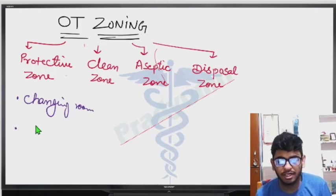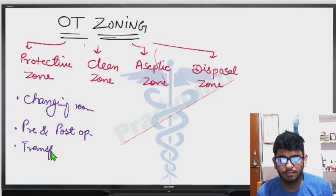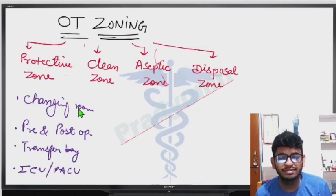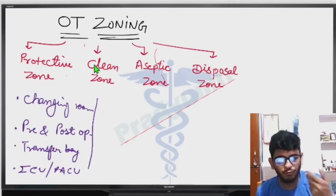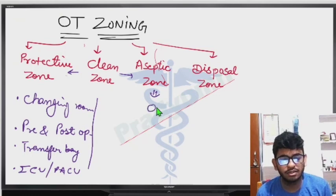The protective zone includes the pre-operative and post-operative rooms, the transfer bay, the ICU, and what we call the PACU. The clean zone connects the protective zone to the OT's aseptic zone — it is the corridor area. The aseptic zone is the actual operation theater.